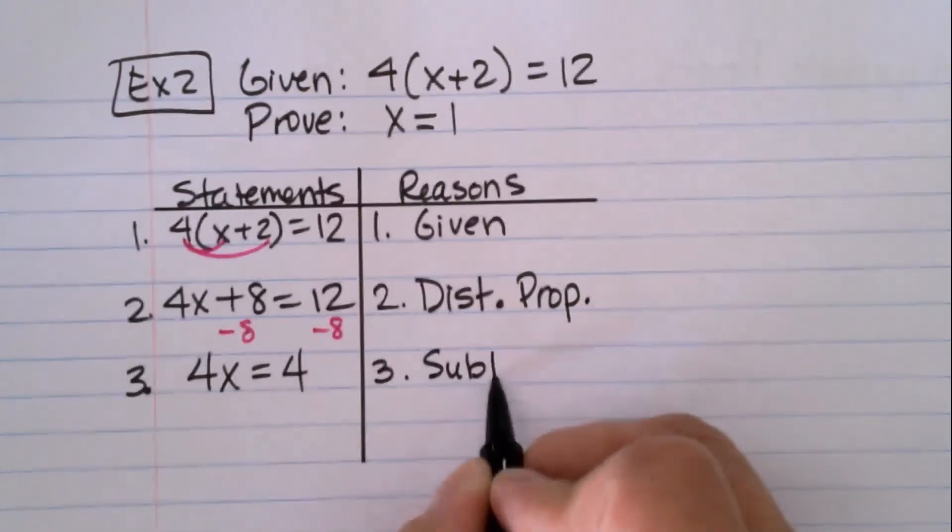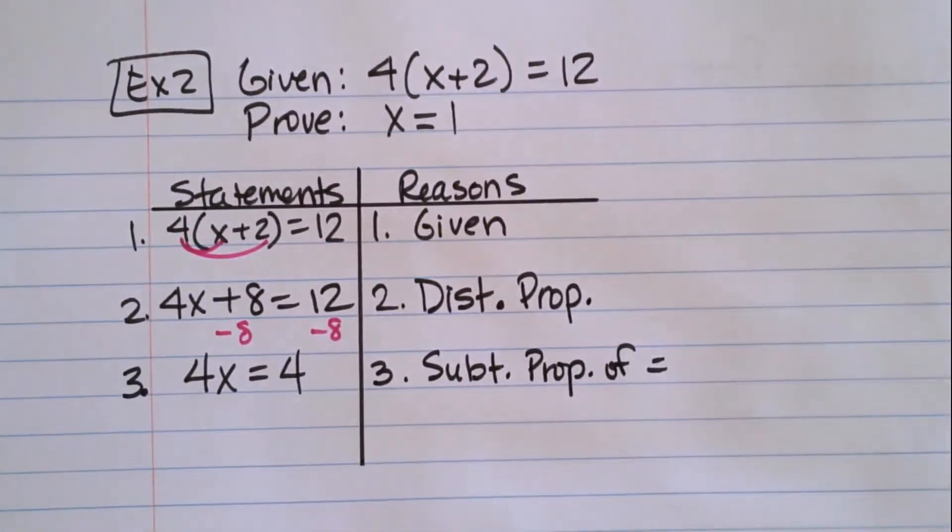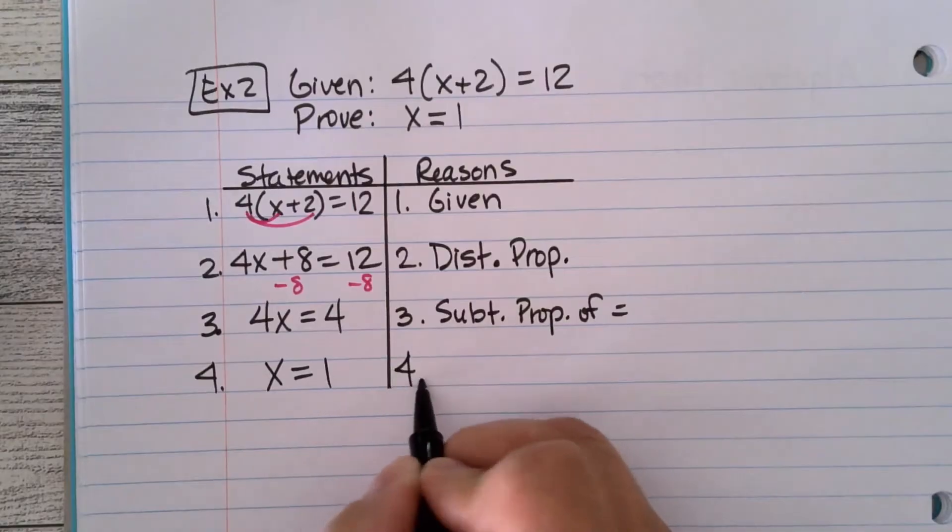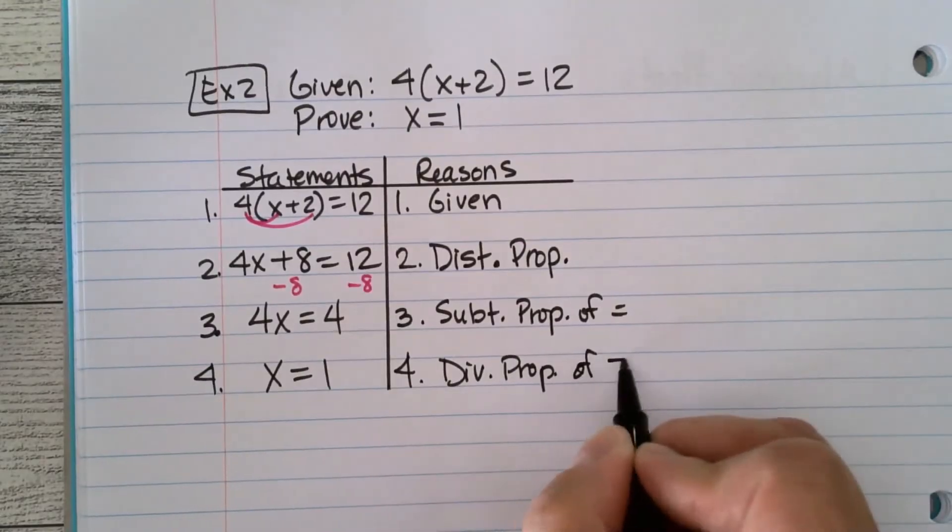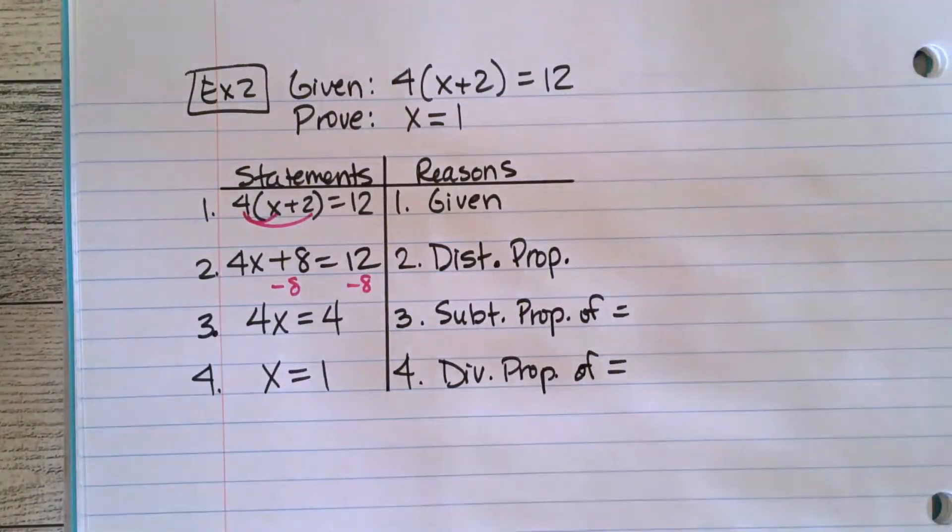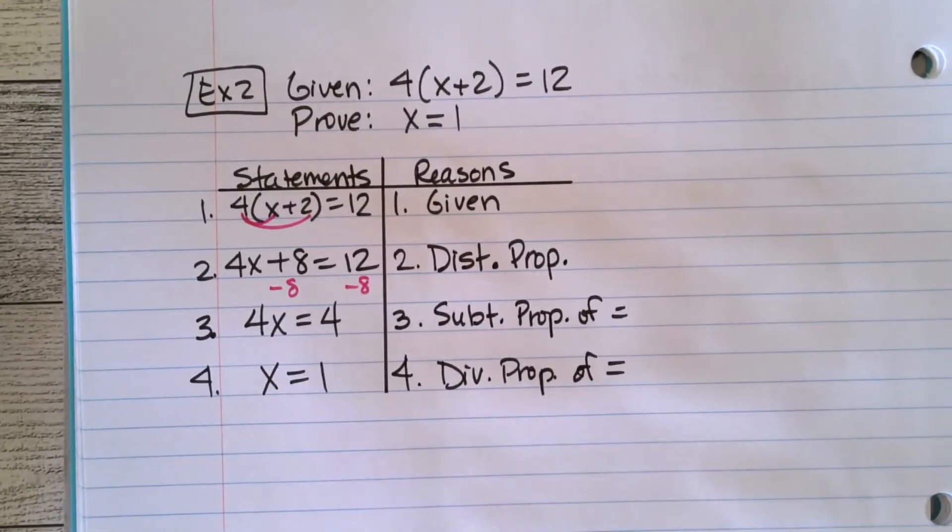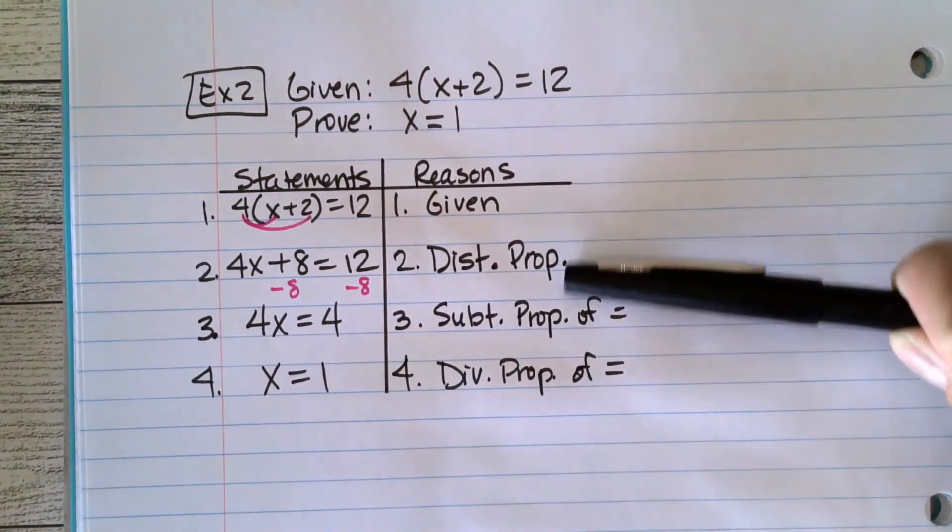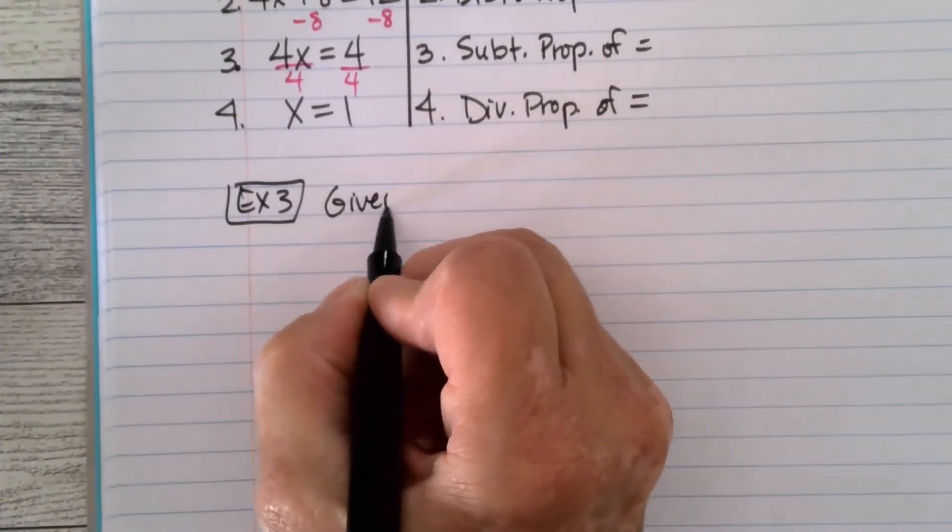Yes. And we're going to abbreviate that SUBT property of equality. You can't just use SUB because we have a substitution property too. So there would be some confusion there. Someone's reading your proof. They may not know what you mean. My statement is x = 1. What is my reason? What did I do? Division property of equality. What I noticed yesterday doing this, I did this in all the classes yesterday. What I noticed is that some people who are having some difficulty with solving equations, things started to click. Because writing out the reasons of what you're doing is kind of like a blueprint of how to solve an equation. So if you're studying for a retake or you're just having to solve equations for me, like a two-step equation or a multi-step equation, these proofs kind of give you the steps in order of what you're doing.